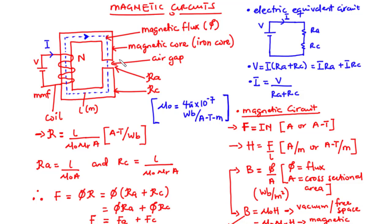Let's consider this magnetic circuit composed of an iron core and an air gap. In place of this iron core, we can have any material of high magnetic permeability. We have a coil of N number of turns wound around the iron core, and a DC voltage source driving current I through the core, thus generating a magnetic field which sets up magnetic flux within the magnetic circuit. This magnetic flux flows through the iron core as well as the air gap.